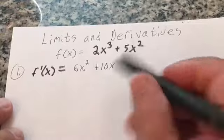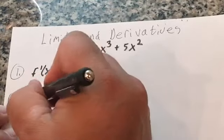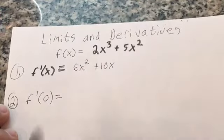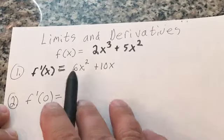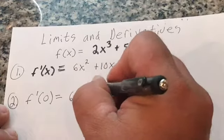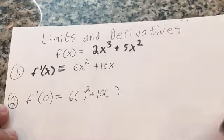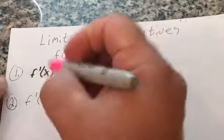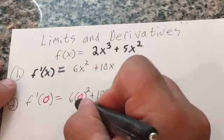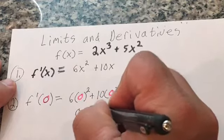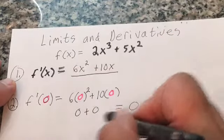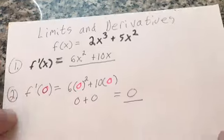Number two: I want to find the value of the derivative at zero, f prime of zero. I plug zero in wherever there's an x in the derivative. So it's 6 times zero squared plus 10 times zero. Zero squared is zero, times 6 is zero; 10 times zero is zero. That equals zero. So the derivative when I plug in zero is zero.